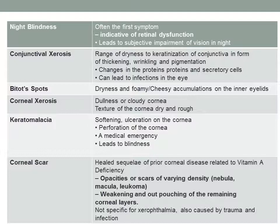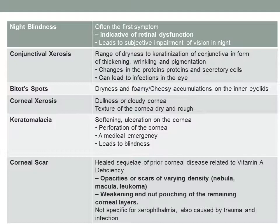Bitot's spots can be seen bilaterally. Corneal xerosis presents as dullness or cloudy cornea with a dry and rough texture. Keratomalacia is softening and ulceration of the cornea, which leads to perforation — a medical emergency resulting in permanent blindness. Corneal scarring is the healed sequelae of prior corneal disease; opacities or scars of varying density occur, causing weakening and outpouching of the remaining corneal layers.